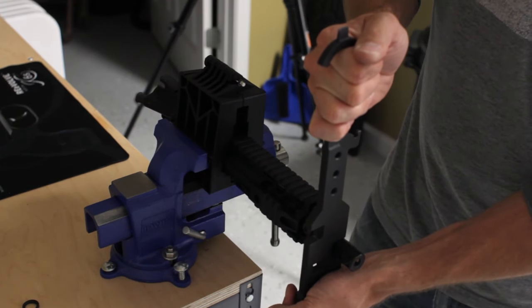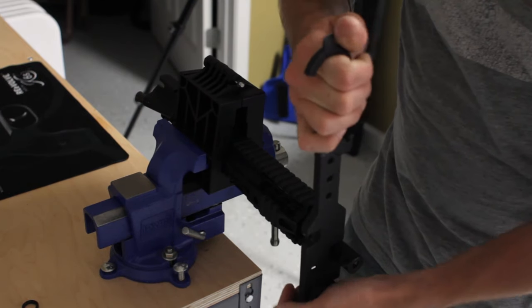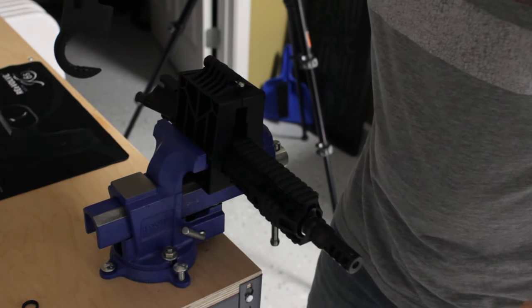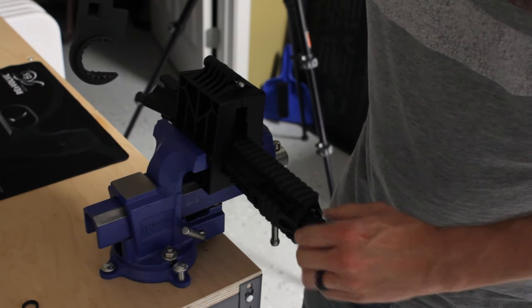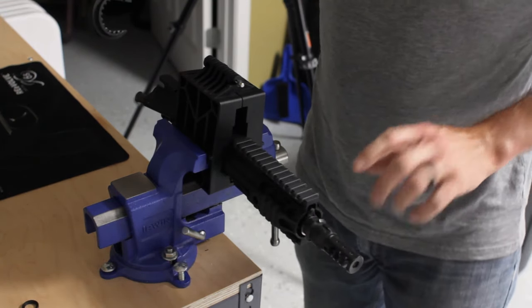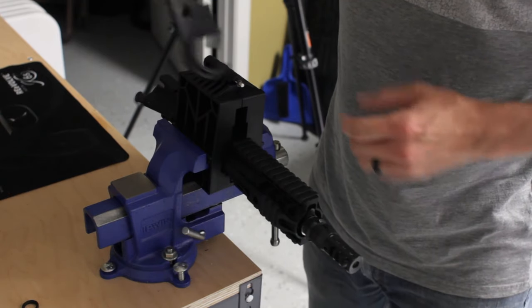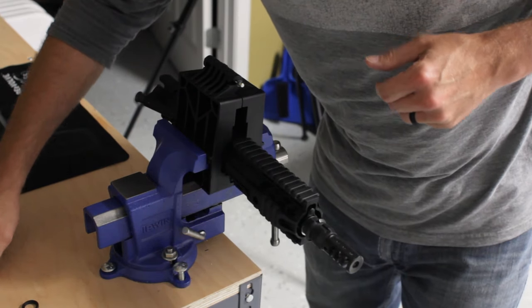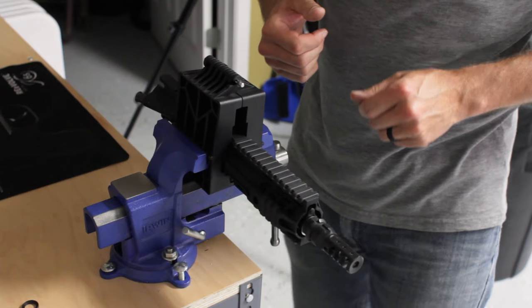I also want to mention that when doing this, one of the things that you want to do too is possibly put some Loctite or some Rocksett on the threads, that way your muzzle brake doesn't ever back off. And that will do it.